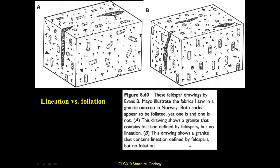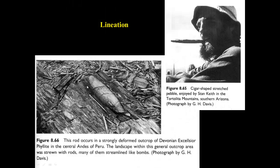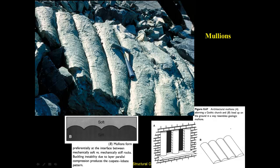On the right is lineation but no foliation, though there's a hint of it developing. Here's an example of a rod — a heavily deformed rock stretched so much that we get these elongate features. It could have been a conglomerate, making it a stretched pebble conglomerate. Other lineations include mullions, like we saw in Barnard Canyon. These develop at the interface between soft and stiff material, where preferential stretching and injection of soft material into stiff material creates linear features or lineations.